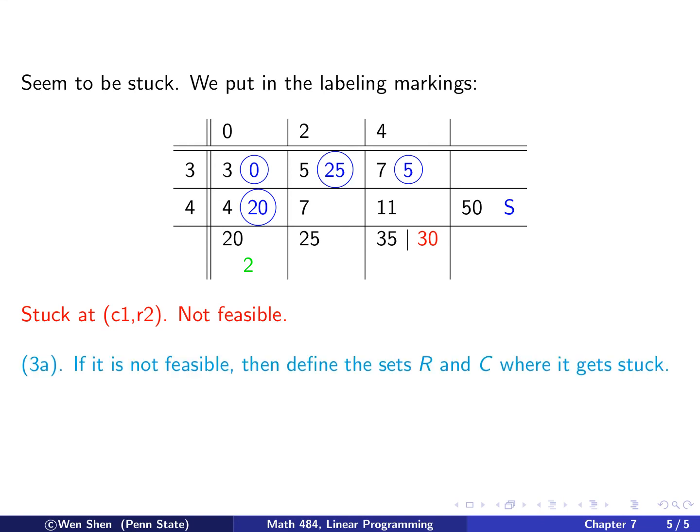Here comes the next part of the algorithm 3a. If the problem is not feasible, then I would define the corresponding set for indexes row and C, where it is get stuck. For our problem, I see that I am stuck at row 2 and column 1. So R contains 2, the set only one number, and the set C contains 1, only one number. And these informations will be passed on to the next step, which we will continue in the next video.